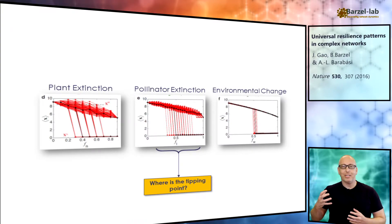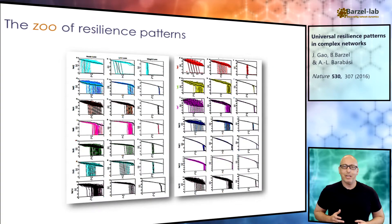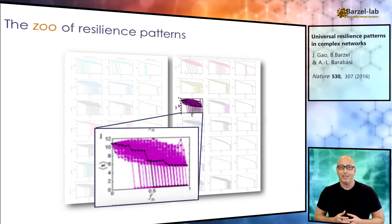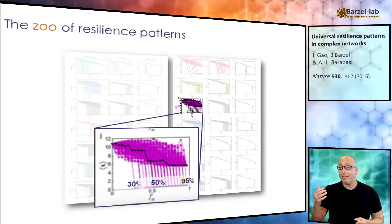Problem is, there is no clear transition point. We examined many networks, and it is an entire zoo. Some systems are very vulnerable, others can withstand more than 90% extinctions before they collapse. Where is the tipping point here? 30%, 50%, or maybe 95%?